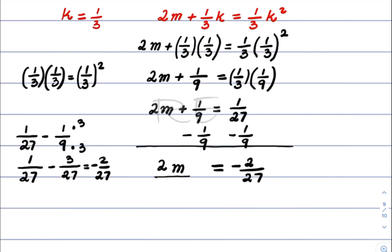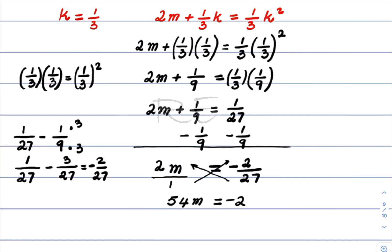Now we cross multiply. 2m is really 2m over one. When we cross multiply, we get 2m times twenty-seven, which is fifty-four m, and one times negative two, which is negative two.